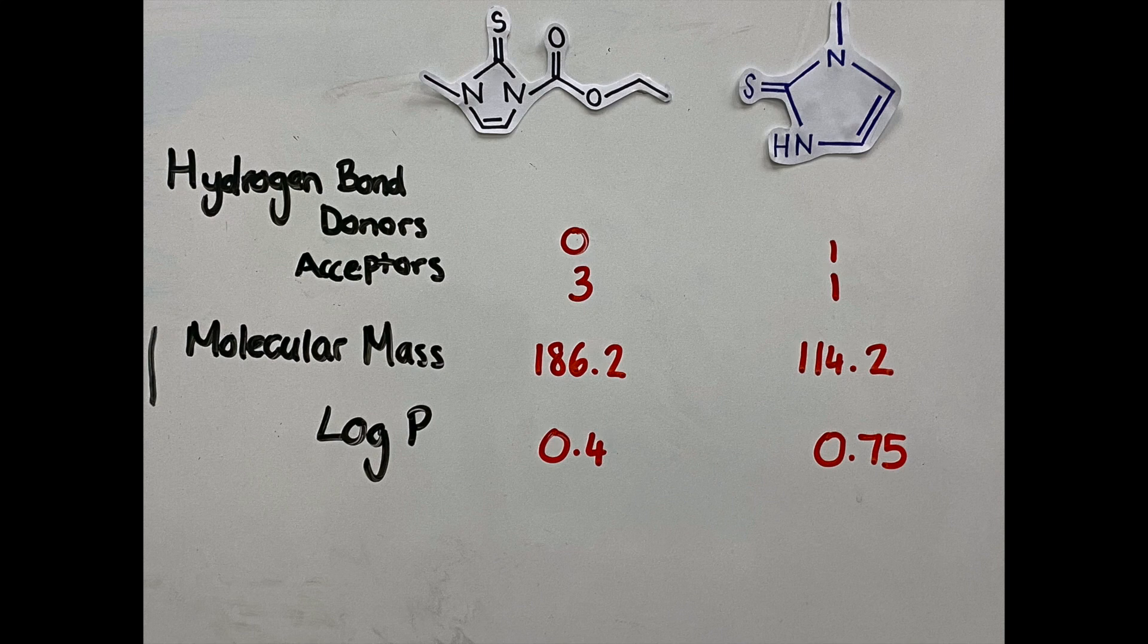Methimazole has one hydrogen bond acceptor, one hydrogen bond donor, a molecular mass of 114.2, and a log P of 0.75.